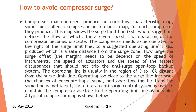How large the surge offset margin needs to be depends on the speed of the actuators and the speed of the fastest disturbance that should not trip the anti-surge backup system. The operating line is usually in the region of 3 to 10% distance from the surge limit line. Operating too close to the surge line increases the chance of encountering a surge, and operating too far from the surge line is inefficient.